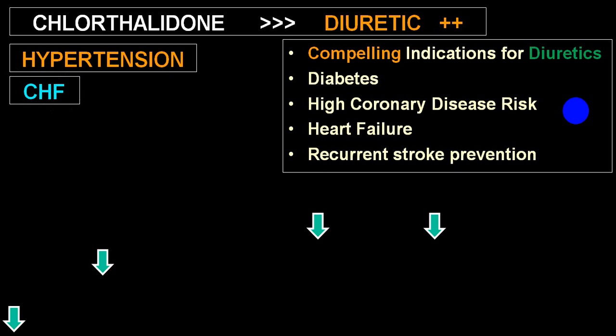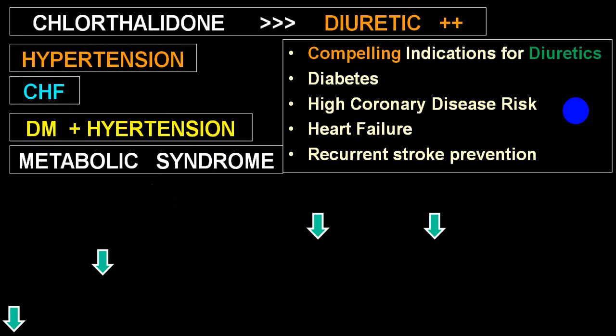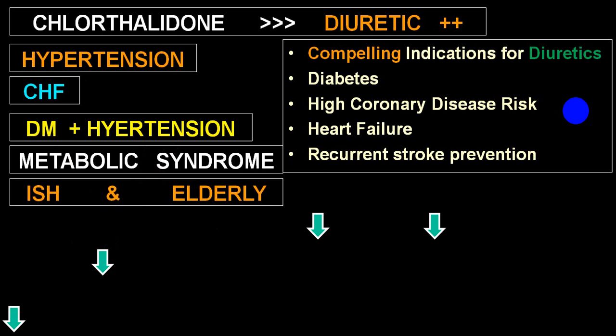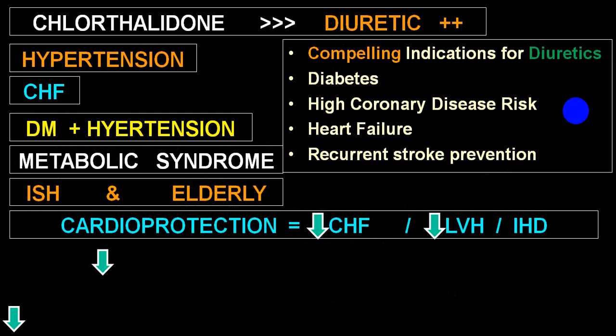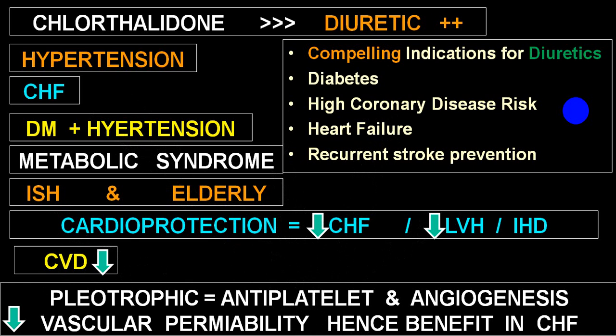Chlorthalidone is utilized in: heart failure with reduced ejection fraction, diabetes with hypertension, metabolic syndrome, isolated systolic hypertension, and elderly individuals. It has cardioprotective effects by reducing congestive heart failure, LVH remodeling, vascular remodeling, and ischemic heart disease. It also reduces cerebrovascular stroke, making it a good drug for reducing stroke events.